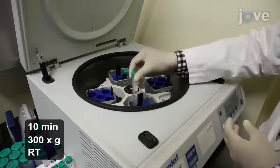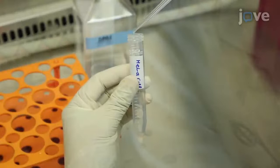Collect the cells by centrifugation, followed by 2 washes in 2 mL of cold PBS per wash.